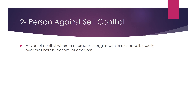Number two: person against self conflict. It is a type of conflict where a character struggles with himself or herself, usually over their beliefs, actions, or decisions. This type of conflict is mostly apparent in short stories. If you remember the introductory lecture on this course, the difference between the short story and the novel is that the short story is a short type of genre that tries to focus on the most elementary things in fiction.